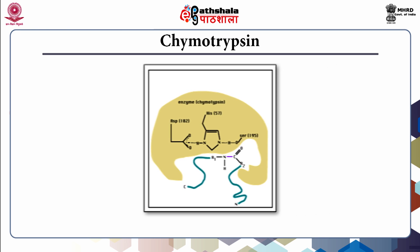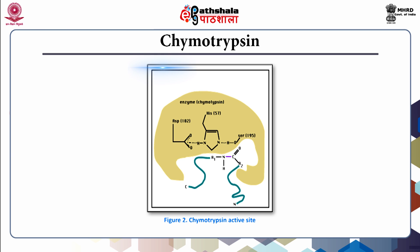One of the most extensively investigated enzymes is chymotrypsin, a proteolytic enzyme. The active site of the enzyme has two interesting structural features: a hydrophobic pocket which can accommodate aromatic amino acids, and a catalytic triad which consists of side chains of residues serine at position 195, histidine at 57, and aspartate at 102. During the reaction, the hydrogen bonding network between these three residues causes deprotonation of serine at the 195 position. The nucleophilic alkoxide anion then attacks the carbonyl carbon in the peptide bond.